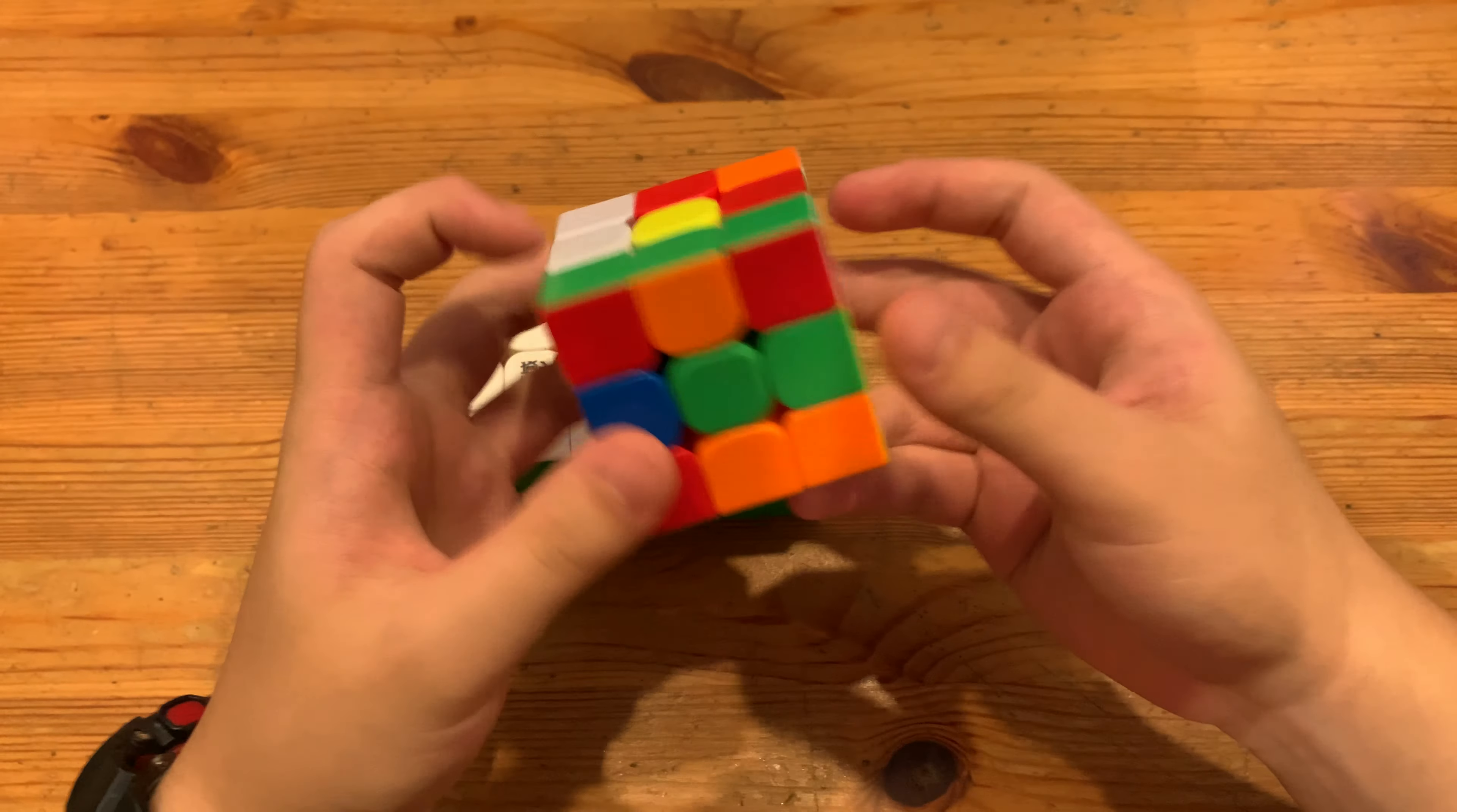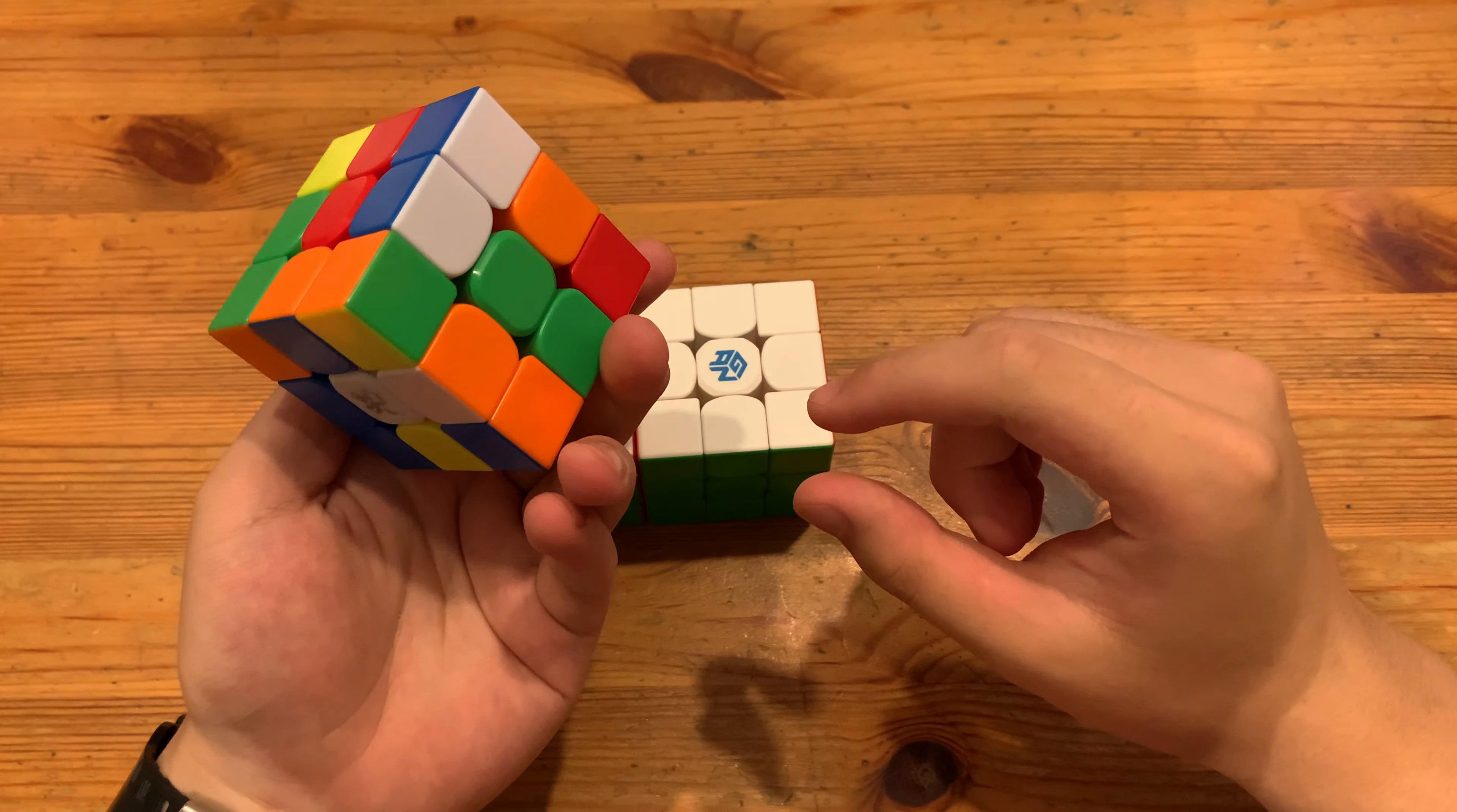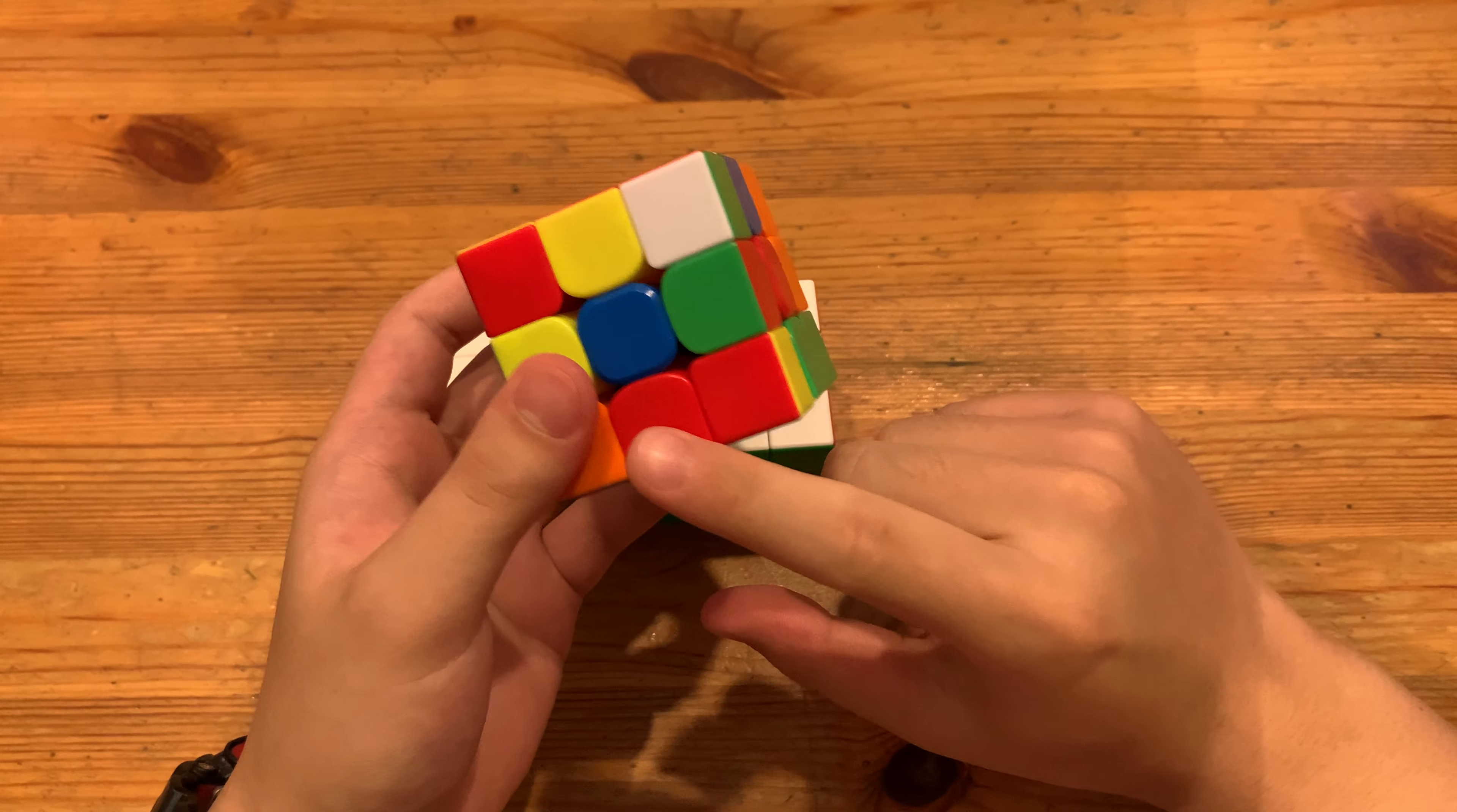And now for the final solve, I can do an X cross. And to do that, I'll do R prime like that. And now red can be put over here. So now I can do R prime F like that to insert these two.